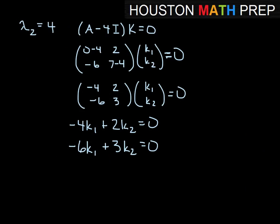Turns out that the bottom equation is one and a half times the top equation, so they're really the same thing. So I'll just use the first one again. If I rearrange this, I could say 2K₂ equals 4K₁.